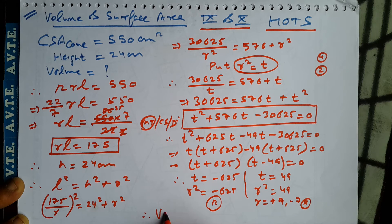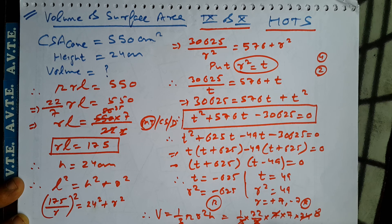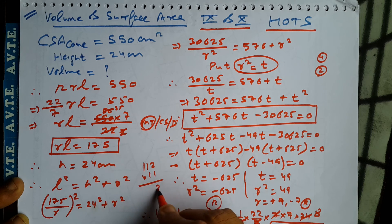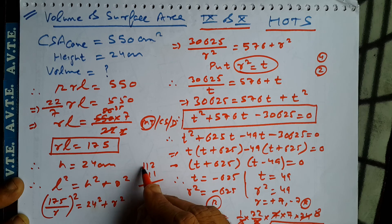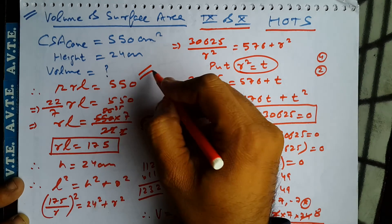Now we can find the volume. Volume is 1 by 3 pi r square h, that is 1 by 3 into 22 by 7 into r square into h. After cancellation, 8 — 7 eights are 56, 56 twos are 112, 112 into 11 is 1232 cubic cm. I hope you understood this kind of question. God bless you all.